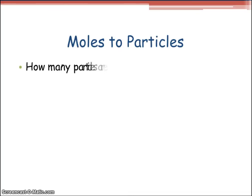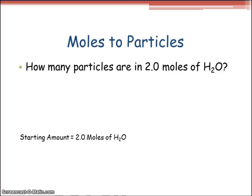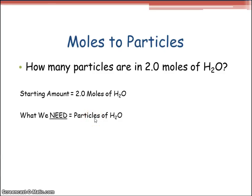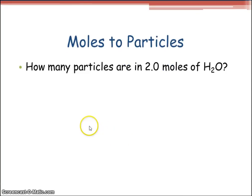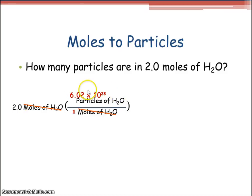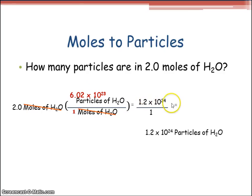Moles to particles. How many particles are in 20 moles of H₂O? Starting amount: 20.0 moles of H₂O. What we need is particles of H₂O. What we have is moles of H₂O, brought downward. For every one mole, we'll have 6.02 times 10 to the 23rd particles. We get an answer of 1.2 times 10 to the 24th particles of H₂O.